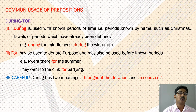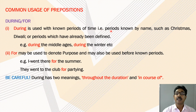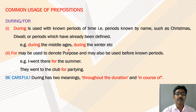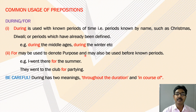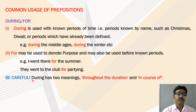The prepositions 'during' and 'for': 'during' is used with a known period of time — that is, periods known by name such as Christmas, Diwali, or periods which have already been defined. For example: during the Middle Ages, during the winter. 'For' may be used to denote purpose and may also be used before known periods. For example: I went there for the summer; they went to the club for partying. 'During' has two meanings: throughout the duration, and in the course of.